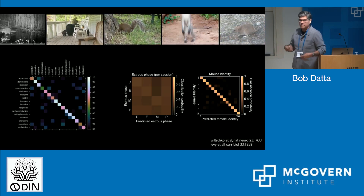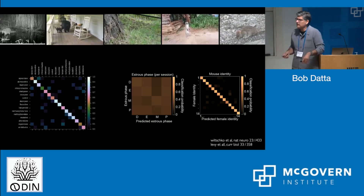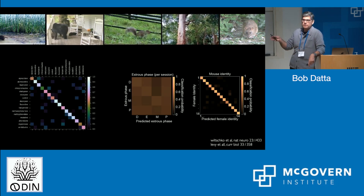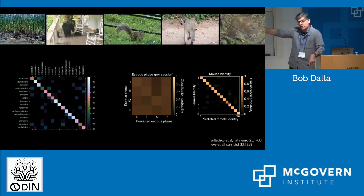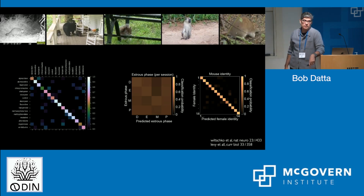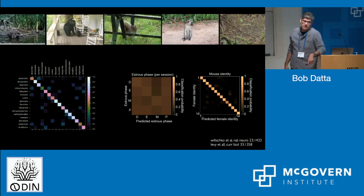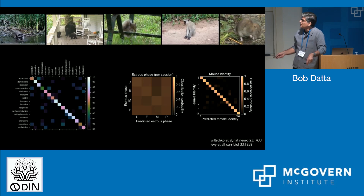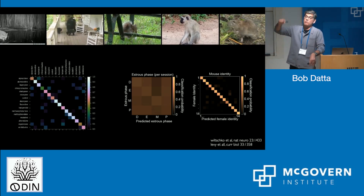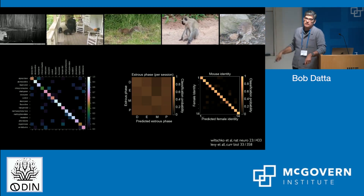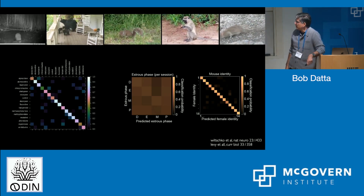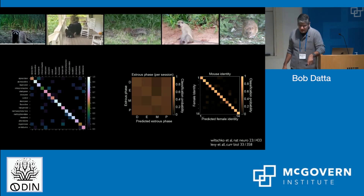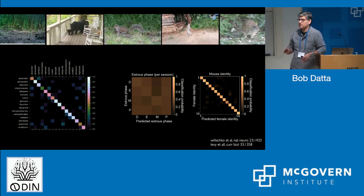Here are a couple thematically related results that highlight strengths of motion sequencing. We took 16 female mice and every day for six weeks ran them in the open field and did motion sequencing, while also swabbing them to determine which phase of the estrous cycle they were in. Based on behavior alone, we can make no predictions about estrous phase, consistent with the idea that the estrous cycle doesn't substantially impact open field behavior in C57 female mice. But remarkably, given 10 minutes of any session from the whole month, we can with approximately 100% accuracy name the mouse generating the behavior, revealing a startling amount of stable inter-individual variability.